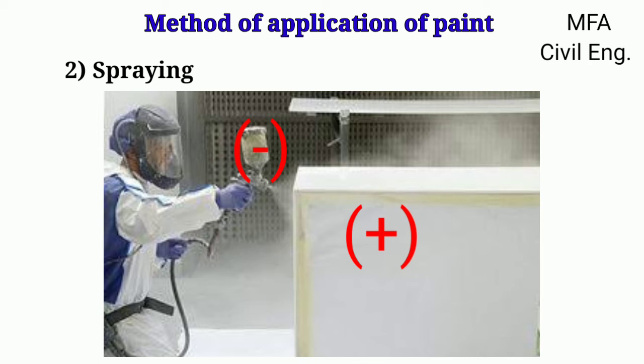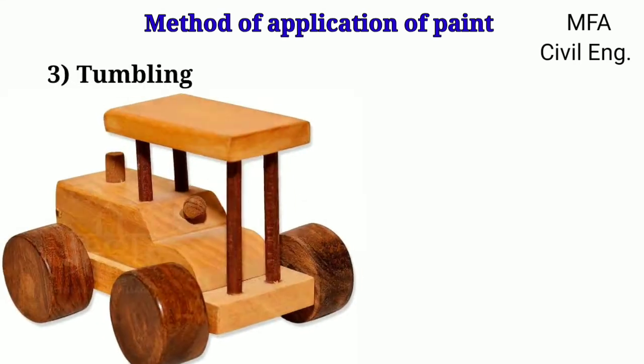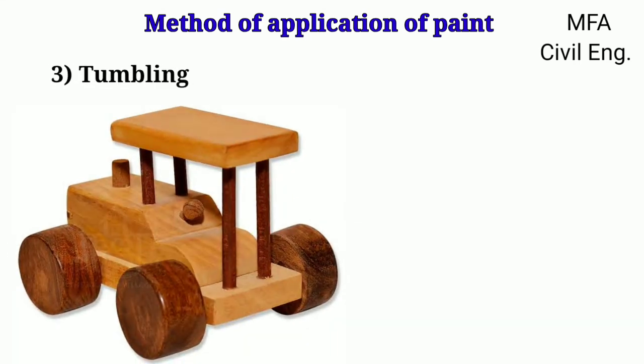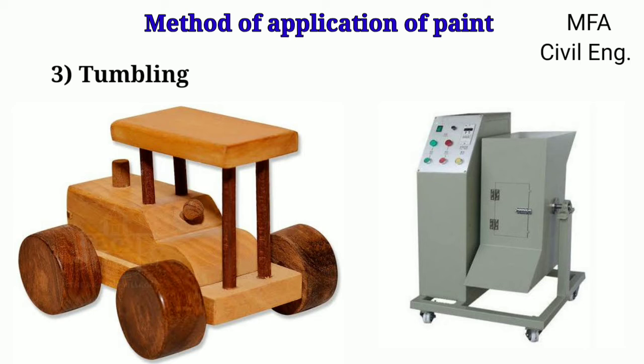Therefore, the chances of pollution are minimized. Tumbling method is used for the painting of small-size wooden articles. The articles are dipped in a proper quantity of paint placed in a rotating barrel. The barrel is then closed and rotated for half an hour with the help of a motor. Paint gets deposited over the articles, which are then taken out and dried.